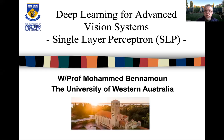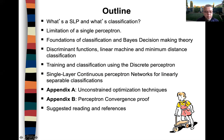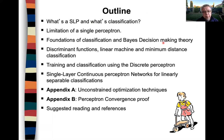Hello. Now let's have a look at a single layer perceptron. The outline of this section covers: what is a single layer perceptron, a clear view of what classification is, the limitations of a single layer perceptron, the foundations of classification and Bayesian decision theory, the discriminant functions, linear machine and minimum distance classification, and training and classification using the discrete perceptron and the single layer continuous perceptron network for linearly separable classification. I've also provided a couple of appendices and suggested reading and references.